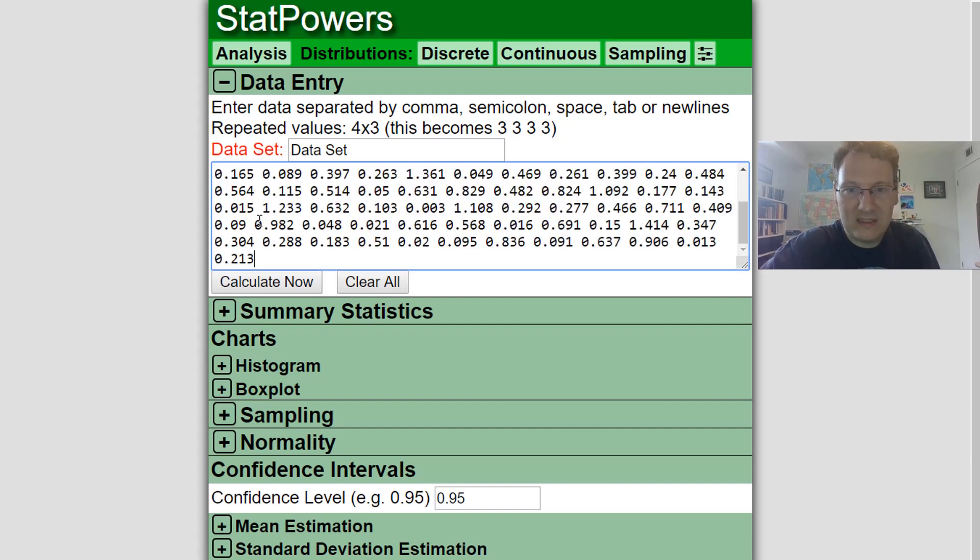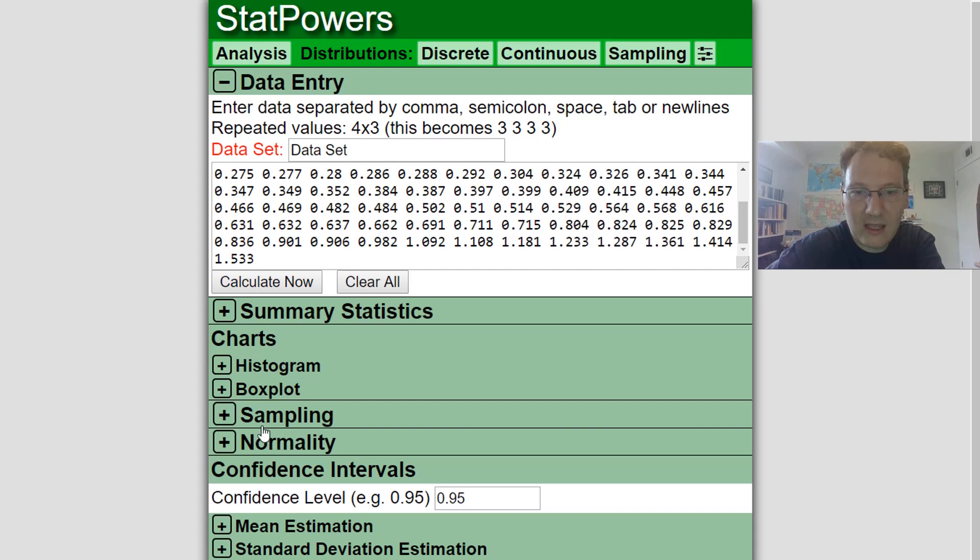So let's just put in some numbers. Here's some data. And never you mind where I got it from. If you click calculate on your data, then let's go under this normality section.